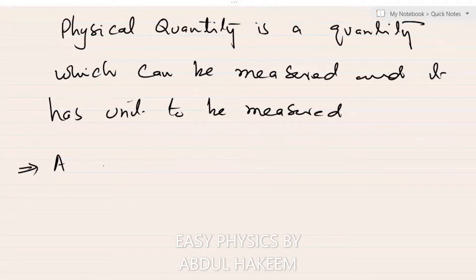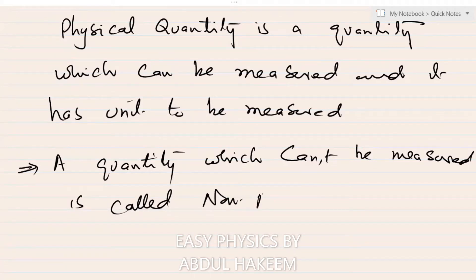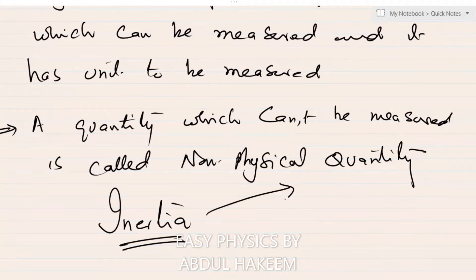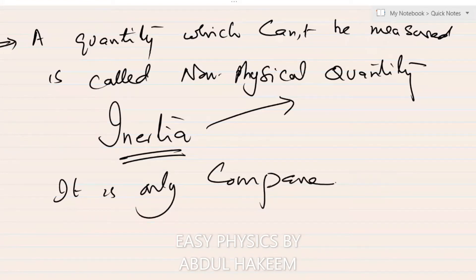A quantity which cannot be measured is called a non-physical quantity. It has no unit to measure. For example, inertia cannot be measured, so inertia is a non-physical quantity. Non-physical quantities cannot be measured — they are only compared: bigger than, smaller than, larger than, taller than, more, less. But no measurement.